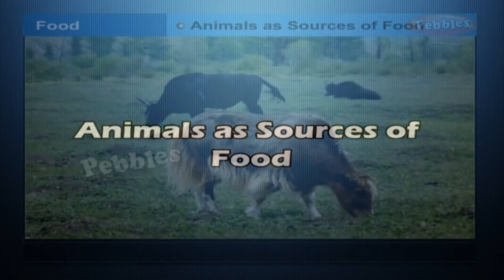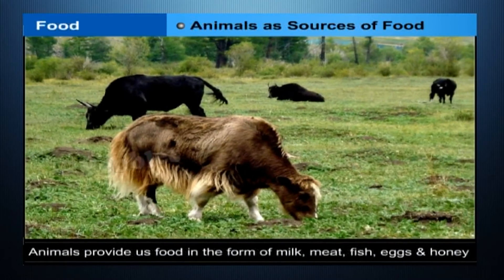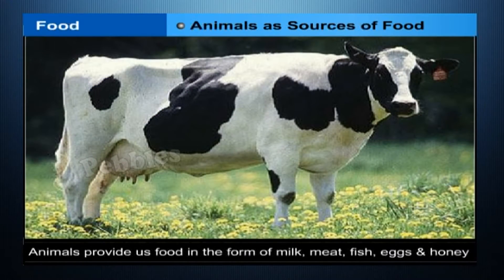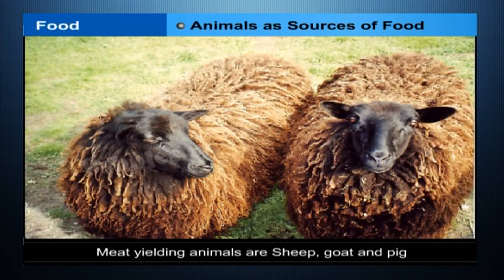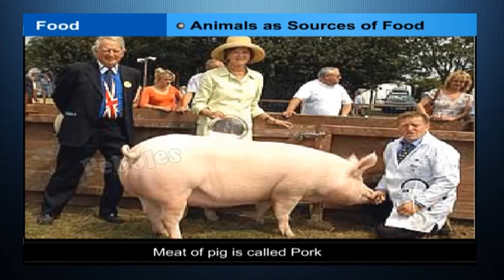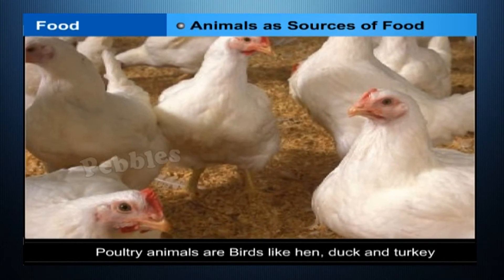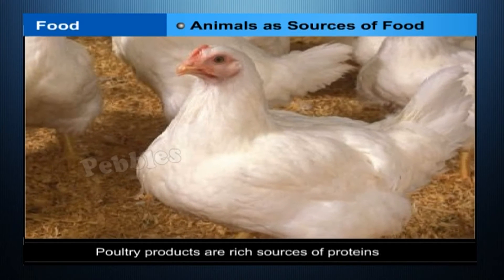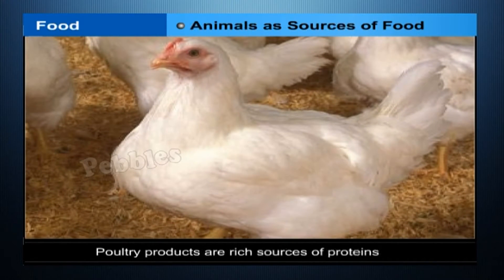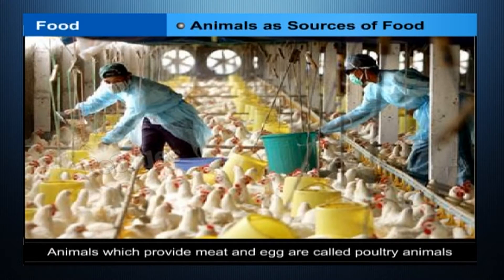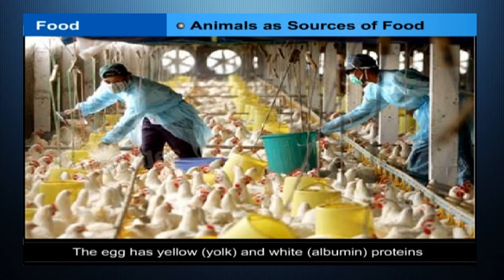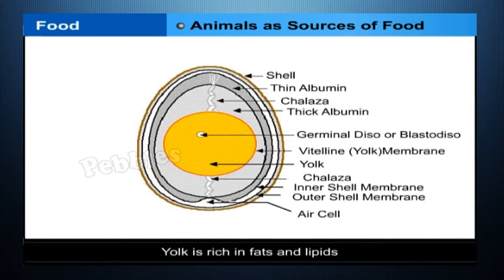Animals as sources of food. Animals provide us food in the form of milk, meat, fish, eggs, and honey. Milk-yielding animals are cow and buffalo. Meat-yielding animals are sheep, goat, and pig — meat of pig is called pork. Poultry animals are birds like hen, duck, and turkey. Poultry products are rich sources of proteins and have the right kind of fat for good health. Animals which provide meat and egg are called poultry animals. The egg has yellow yolk and white albumin proteins. Yolk is rich in fats and lipids while the albumin is rich in proteins. The egg shell is made of calcium carbonate.